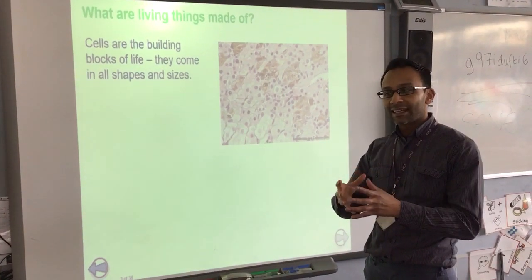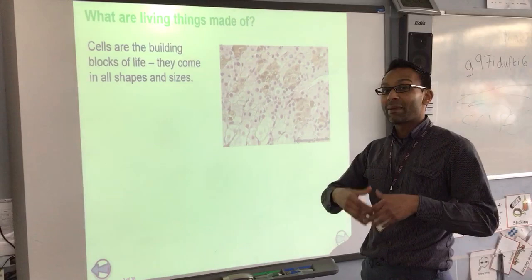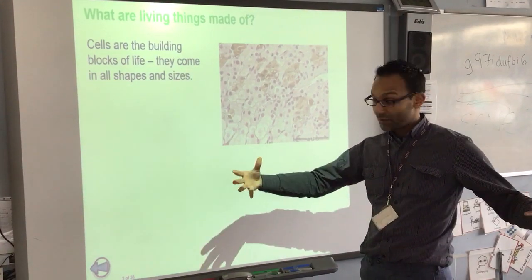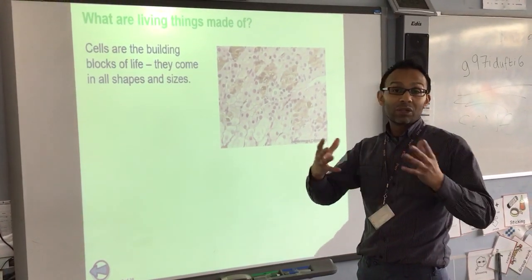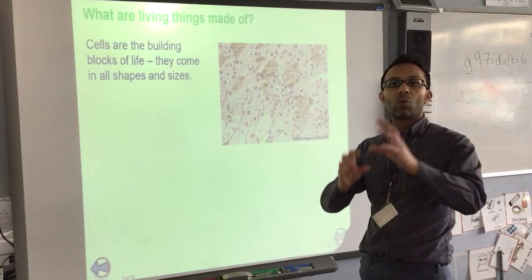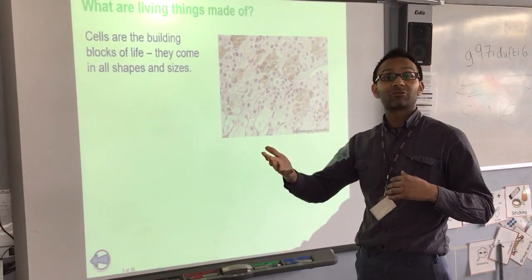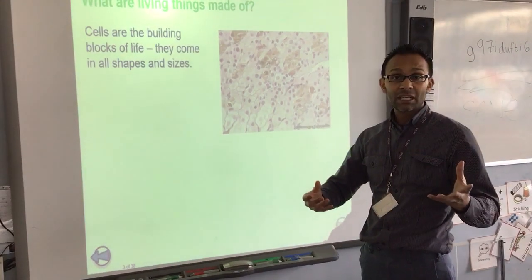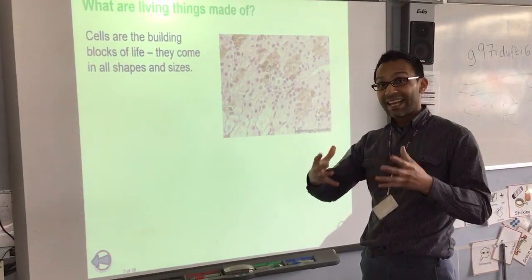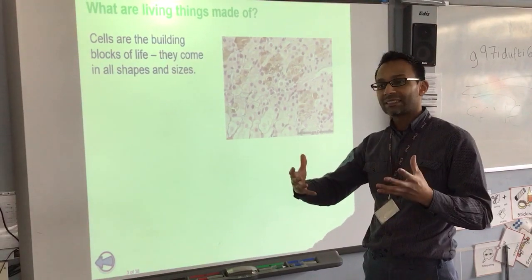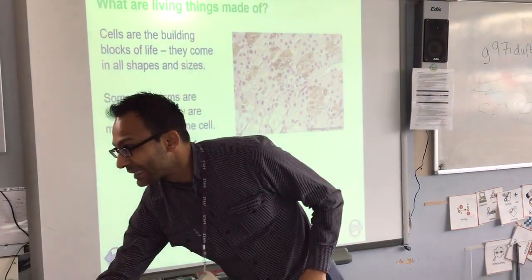Now, a group of cells put together makes tissues. Put tissues together and we make organs. When we've got lots of organs together we have an organ system, and when you've got different organ systems — for example the circulatory system, digestive system, nervous system — put all of those together and we have an organism, and an organism is a living thing.